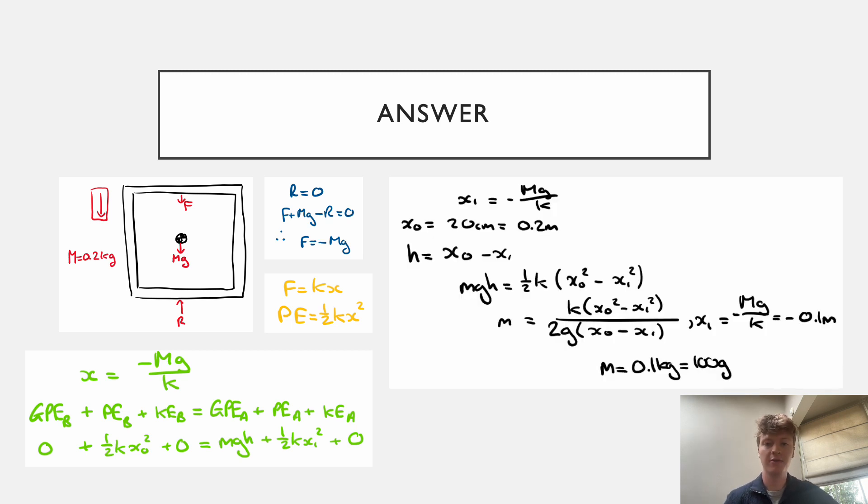Okay, so here is the final bit of the working. The first thing I've done is to find what x1 was. And this is the extension afterwards. And that's what we found earlier with the condition of the reaction force being zero. So we can just put in that x1 is minus mg on K, which we found. And then x0 is the original extension of the spring, which are actually just given immediately in the question. And they told us it's 20 centimeters, which is 0.2 meters.